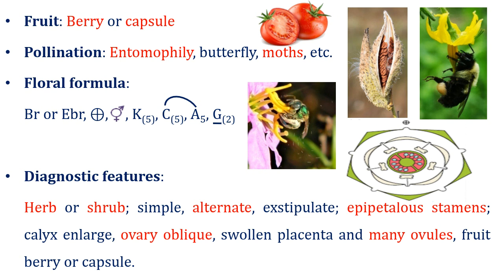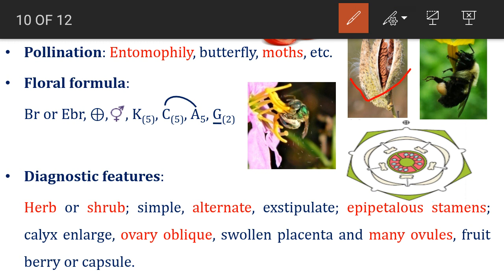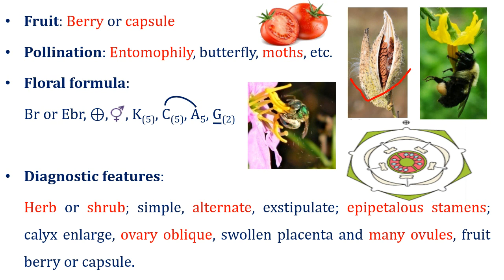In Solanaceae, the major fruit types are berry or capsule. A berry is a simple fleshy fruit with many seeds, derived from a single ovary, where the middle and inner layers of the fruit wall are not distinct — tomato is a berry. A capsule is a type of simple dry fruit, a dehiscent fruit produced by many species of angiosperms, as seen in Datura. Pollination is entomophilous — by butterflies and bumblebees — and the images show pollinators involved in pollination in this family.